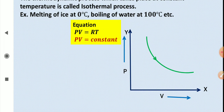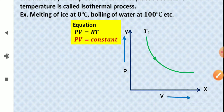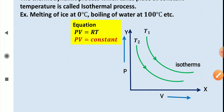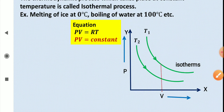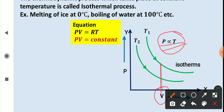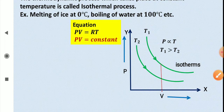Looking at the PV diagram, we can draw one curve at temperature T₁ and another at temperature T₂. These PV graphs are called isotherms. Since pressure is proportional to temperature at constant volume, the curve with higher pressure corresponds to higher temperature — therefore T₁ is greater than T₂.